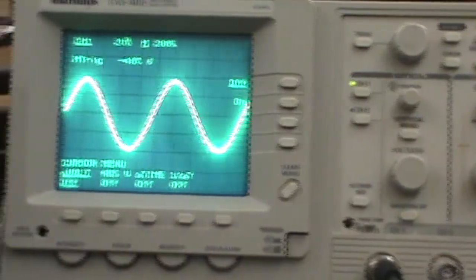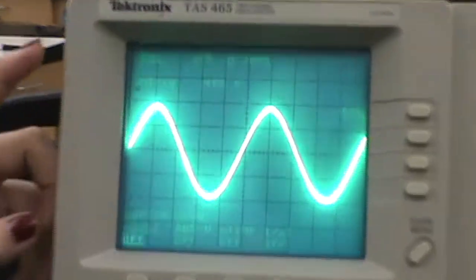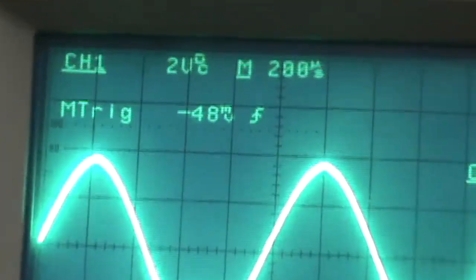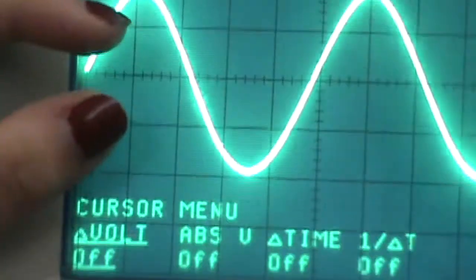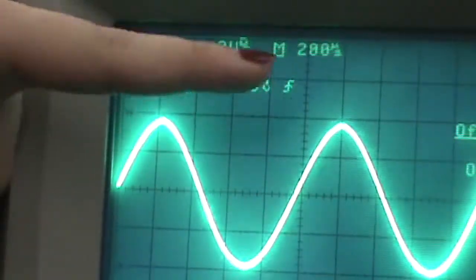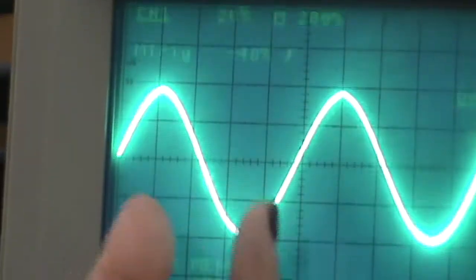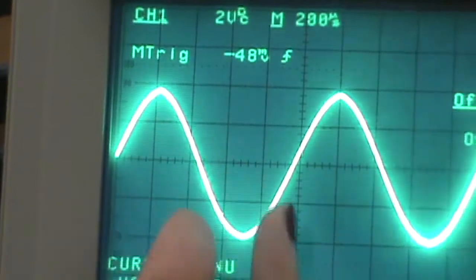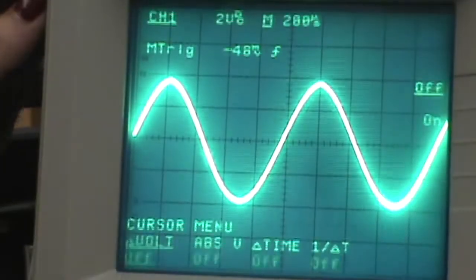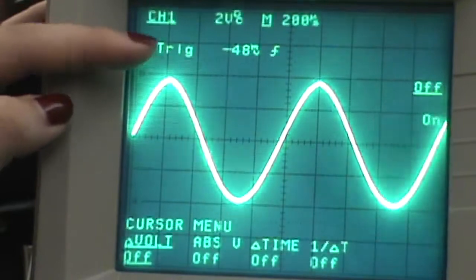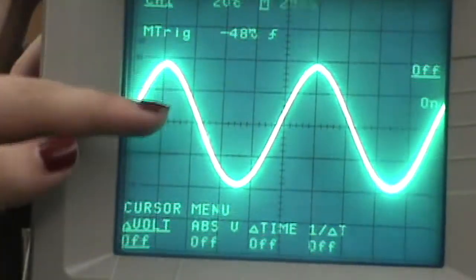So here, channel 1, 2 volt means for the waveform of channel 1, one vertical square equals 2 volts, and this 200 milliseconds means one horizontal square equals 200 milliseconds. This waveform has an amplitude of roughly 4 volts as we can read through the grid.